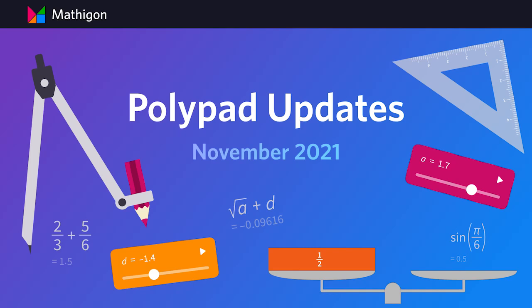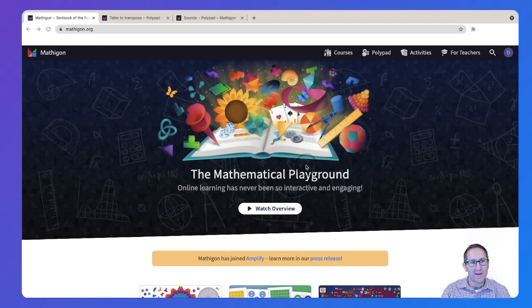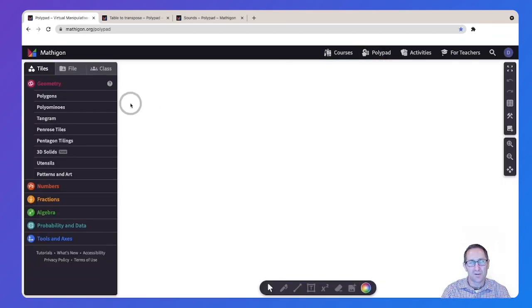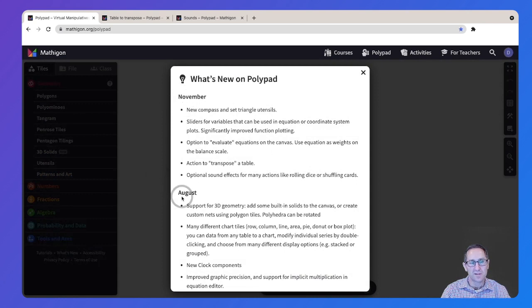Hey everyone, I'm Dave from Mathagon and in this video I'm going to share with you our Polypad updates for November 2021. So here I am at mathagon.org. I'm going to use the link at the top to head over to Polypad. First thing to point out at the bottom of the tile menu is a link called What's New. There you can see all the features we've added to Polypad in November. I'll be talking about all of these in this video and I'll start with the compass and the set triangle.